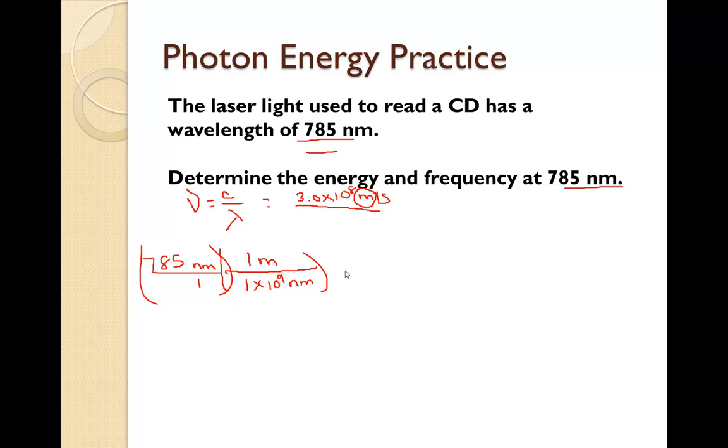That comes out to be 7.85 times ten to the negative seven meters. We're going to plug that into the lambda. That comes out to be 3.82 times ten to the fourteenth. Notice the meters cancel out and we left over with seconds, but it's one over seconds.